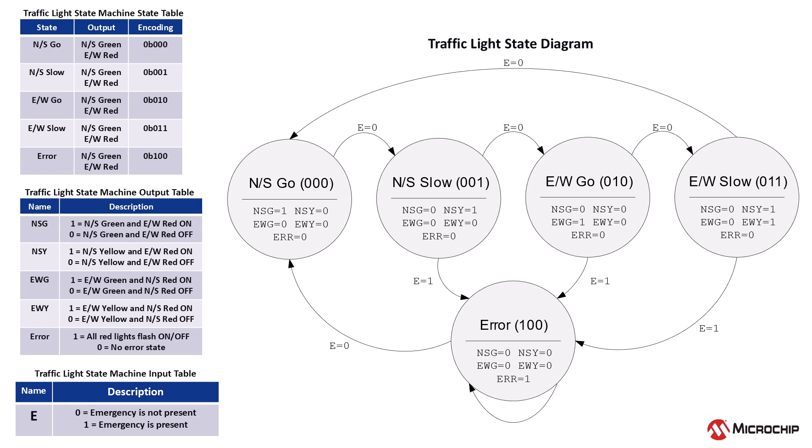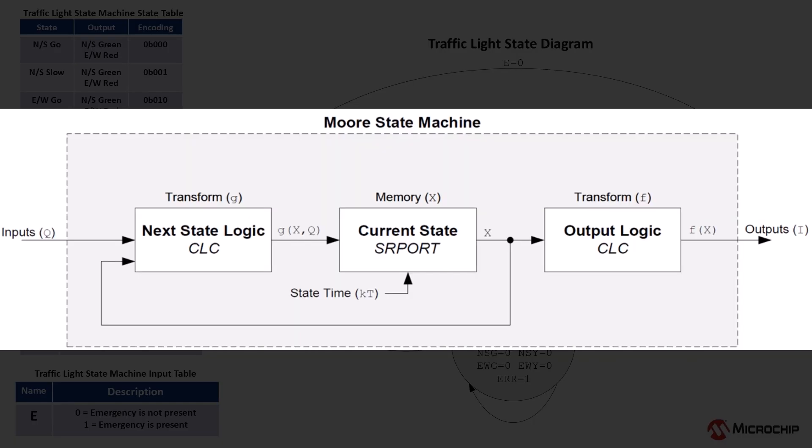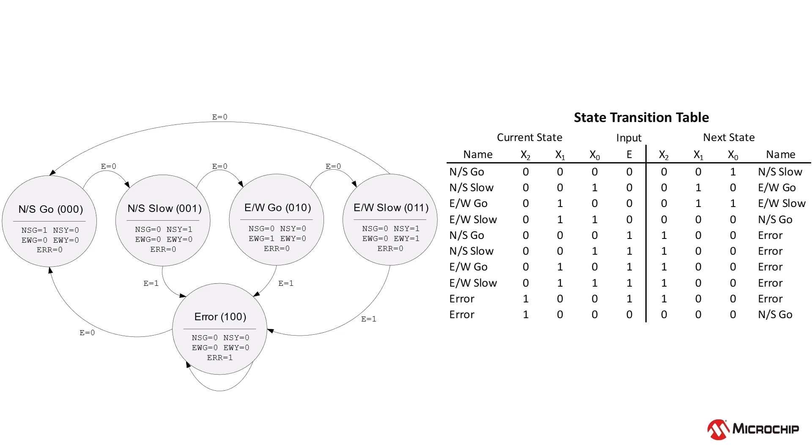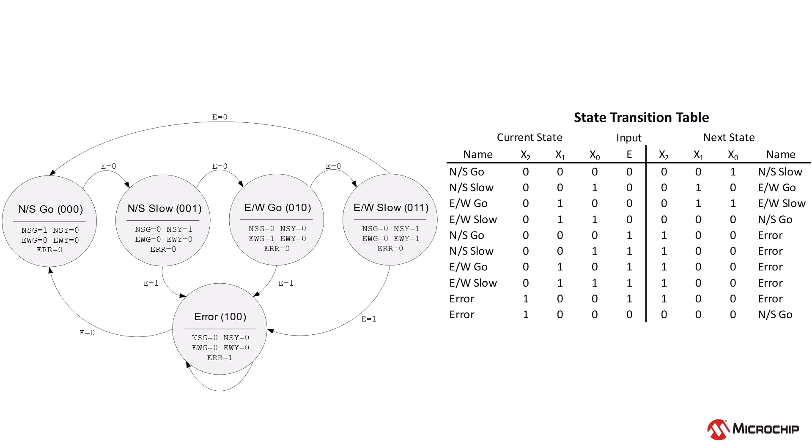Now that we have the states, outputs, and inputs defined, the next step is to create the state transition diagram, which visually maps how the system moves between states based on input conditions. Each state is represented as a labeled circle with arrows indicating transitions that occur when specific conditions are met. Since the system operates as a Moore machine, the outputs depend only on the current state. Now that the state diagram is complete, we can define the state transition table, which maps how the system moves between states based on inputs and binary encoding.